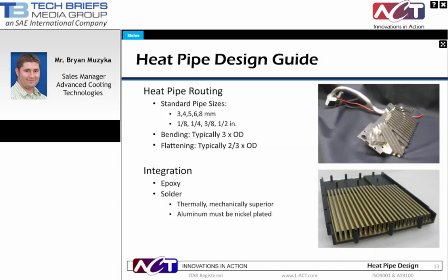The next step is to integrate heat pipes into your system. The key points are bending and flattening guidelines. If you can keep a bend radius greater than 3 times the outside diameter and a flatness greater than two-thirds the outside diameter, the heat pipe can be manufactured accordingly. If you're close to these values but need a slightly tighter profile, give us a call and we can advise on feasibility. As far as attaching your heat pipe into your system, most heat pipes are epoxied or soldered into the assembly. Solder provides a thermally and mechanically superior joint, but if your heat flux isn't critical, epoxy can be used.